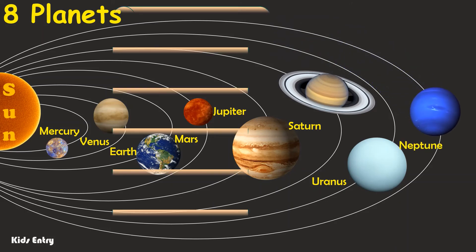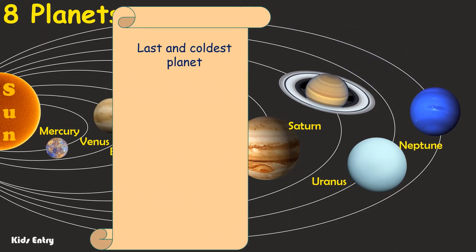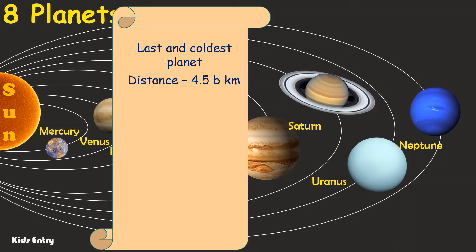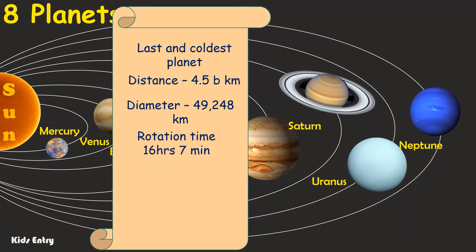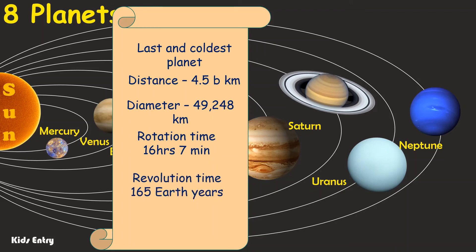Neptune: the last and the coldest planet in the solar system. Distance from the Sun to Neptune is 4.5 billion kilometers. Its diameter is 49,248 kilometers. One day on Neptune lasts 16 hours, 7 minutes. One year on Neptune lasts 165 Earth years. It has 13 moons.